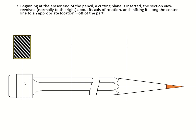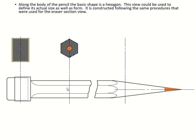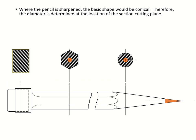The second cut is the body of the pencil. The basic shape is a hexagon, which you can see after we cut it. We use the cutting plane and revolve it. The third section is the pencil head or tip — its basic shape is like an ice cream cone, so it's conical. The diameter is determined at the location on the section cutting plane.